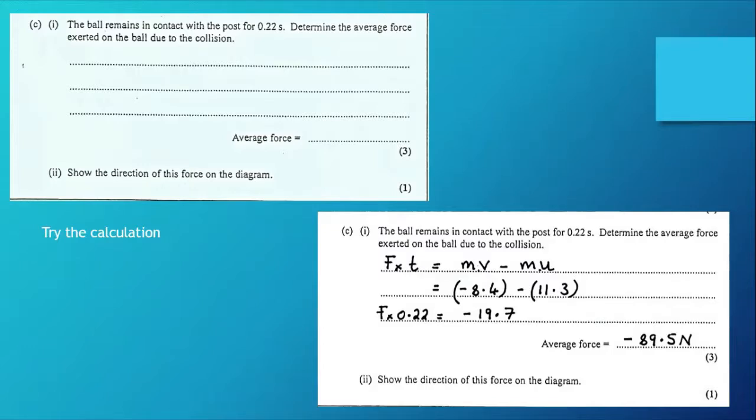The average force is 89.5 newtons. The minus sign tells us something about the direction. We can use a bit of common sense to realize that this force is to the left. This is the force on the ball because of course the ball is going in that direction. The force on the post will of course be in the opposite direction, and we could draw that in the diagram although I haven't done so here.